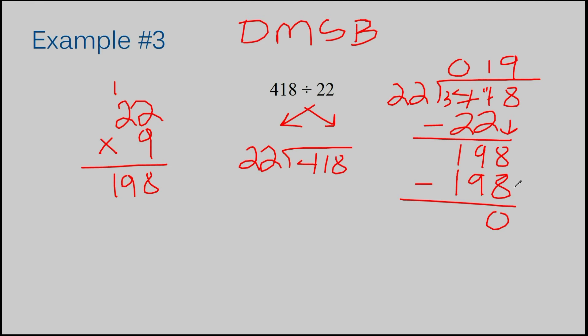Subtract and get 0. Yes, there's no other numbers here. I've subtracted and I've gotten a 0. That's a really good sign that I got my answer correct. The answer to example number 3 is 19.